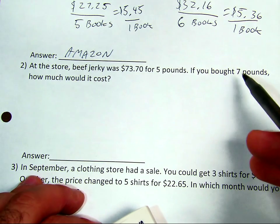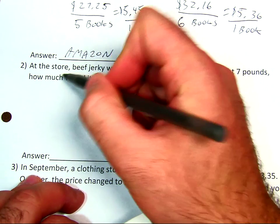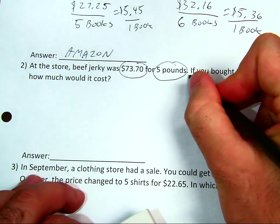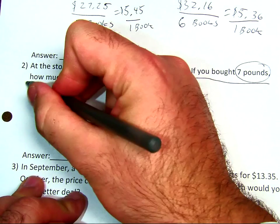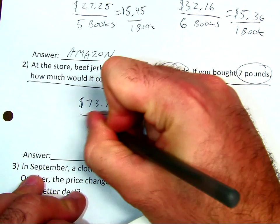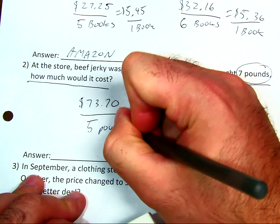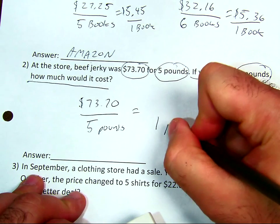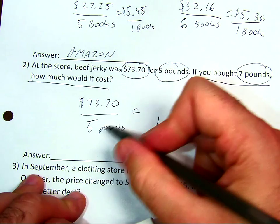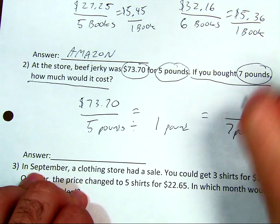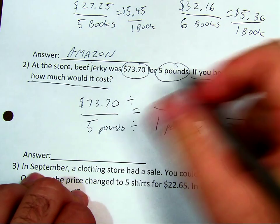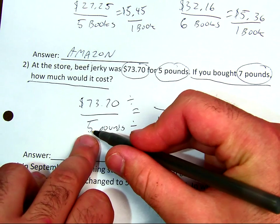I'm going to annotate this problem now. Beef jerky was $73.70 for five pounds — if you bought seven pounds, how much would it cost? My process: I'm going to put money on top. So I have $73.70 for five pounds. I'll go down to find the unit price for one pound, then back up to apply it to seven pounds. To go down in ratios I divide; to go up I multiply. To get from five to one, I divide by five.